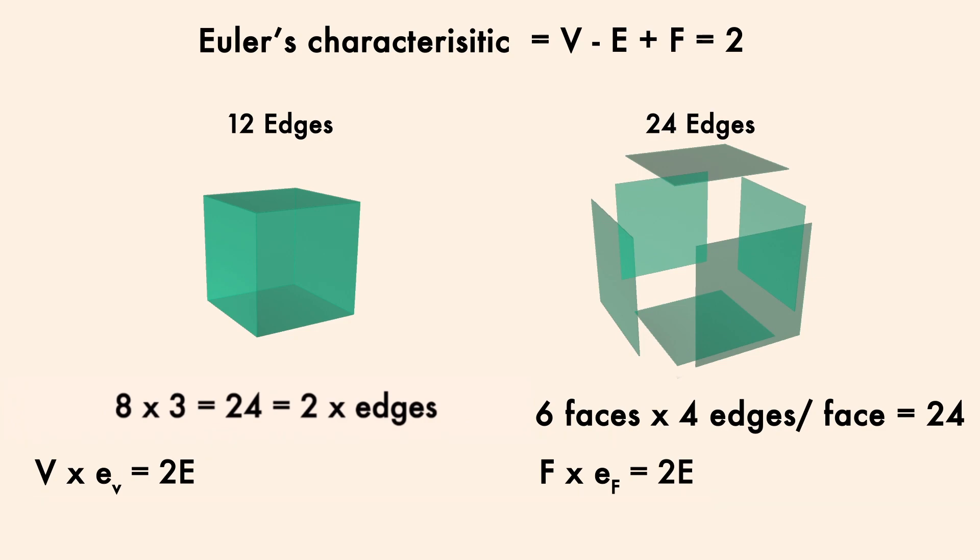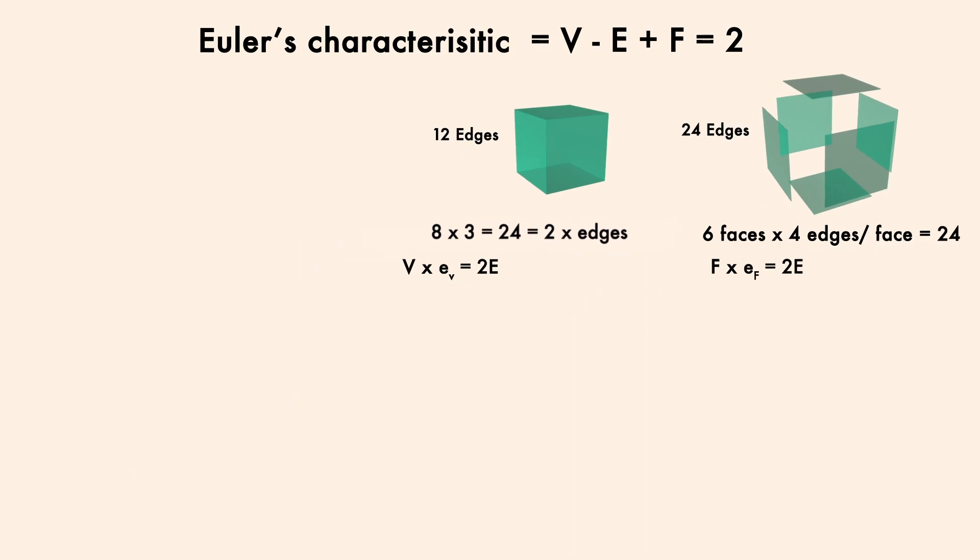So with these properties, we can now prove there are five platonic solids. Let's first put Euler's formula on the screen and set it equal to 2 for our convex polyhedra. Next, I'm just going to put E on the other side.